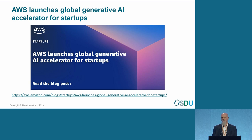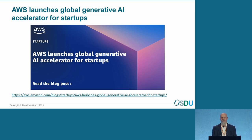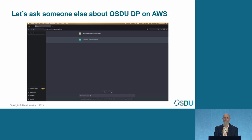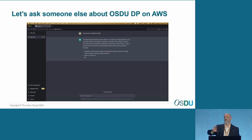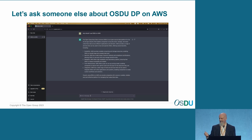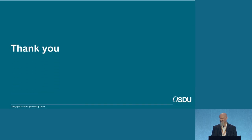For a final slide — if you don't believe me, I decided to ask ChatGPT: why should I use OSDU on AWS? It says sustainability, security, and everything else. So don't trust me — trust ChatGPT. Thank you OpenAI for that. I agree. And that's all I have.